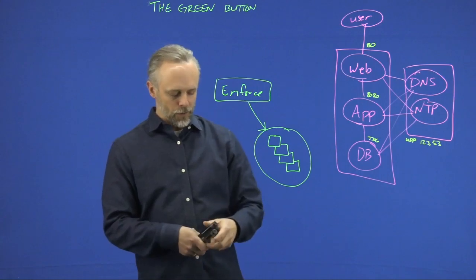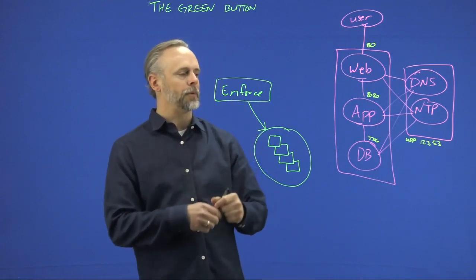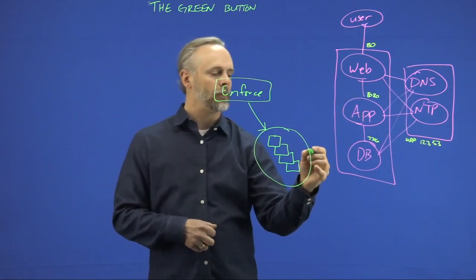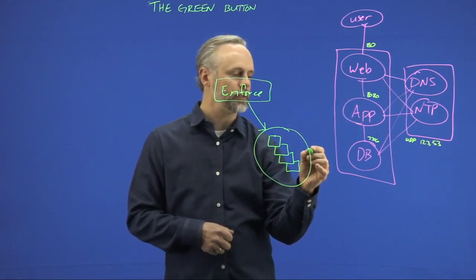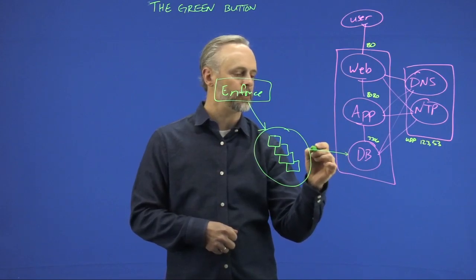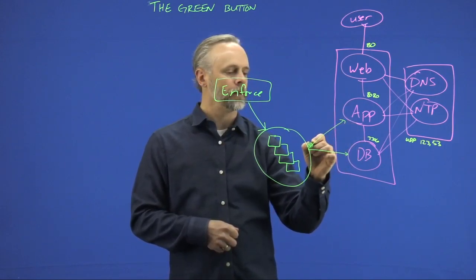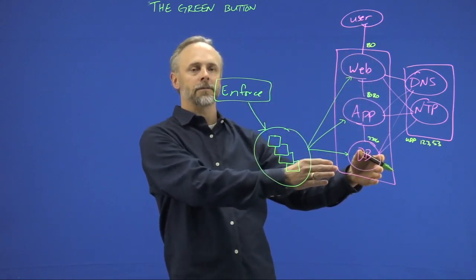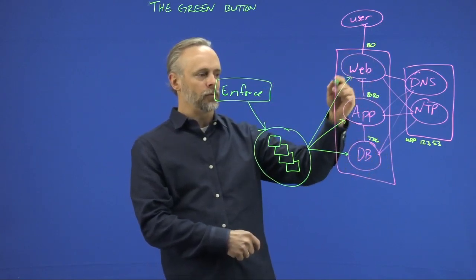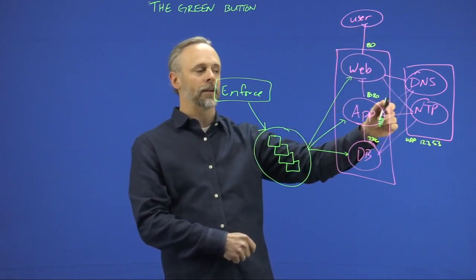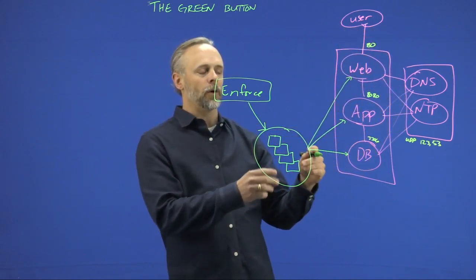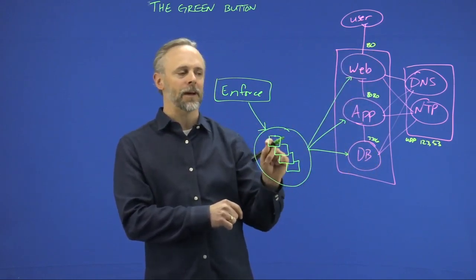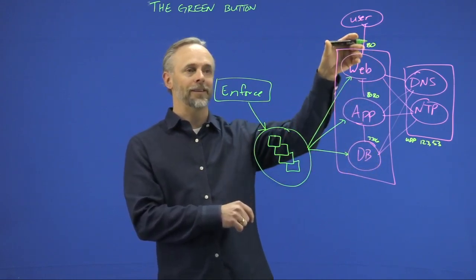So essentially what we're going to do is when we hit that button, Tetration is going to take the policies that we have learned about and send information to each one of these endpoints. Now again, we've scoped this one application. There are things within the application that are happening, but also things outside of the application that are happening.